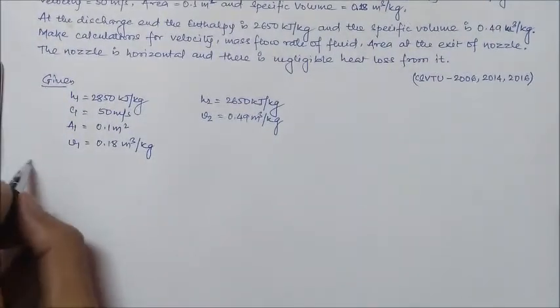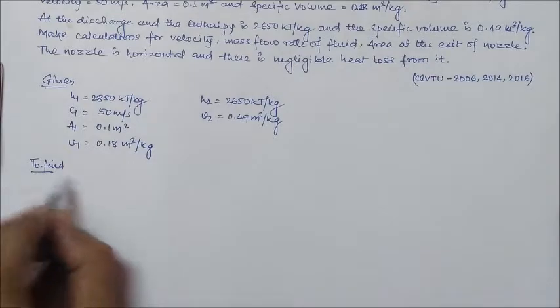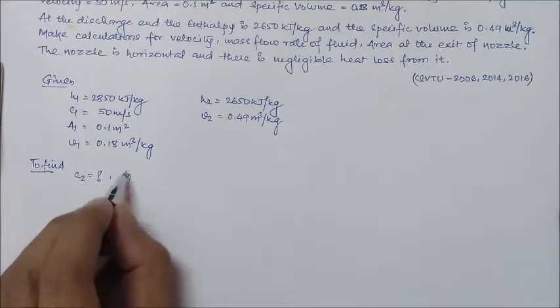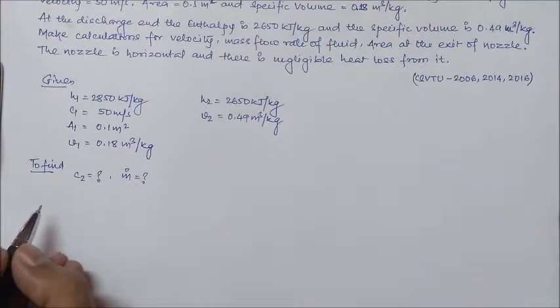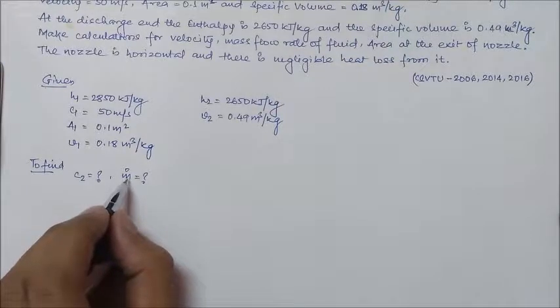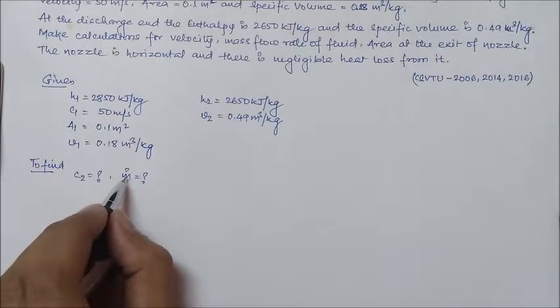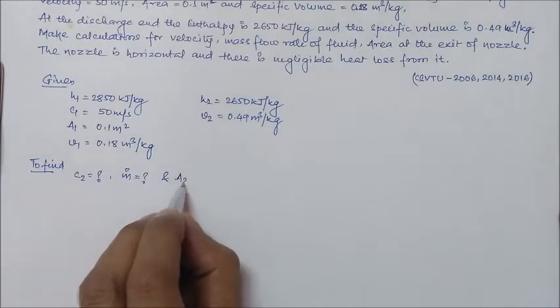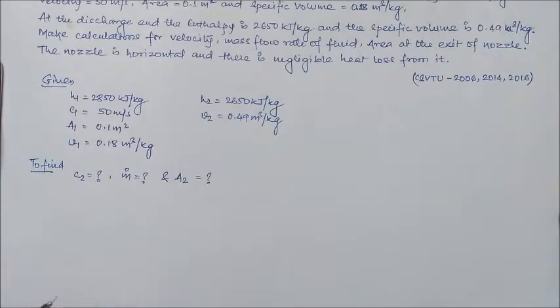So what we have to find out? To find, we need to find out C2, we have to find out the mass flow rate m dot in kg per second, and we need to find out the outlet cross-sectional area A2.